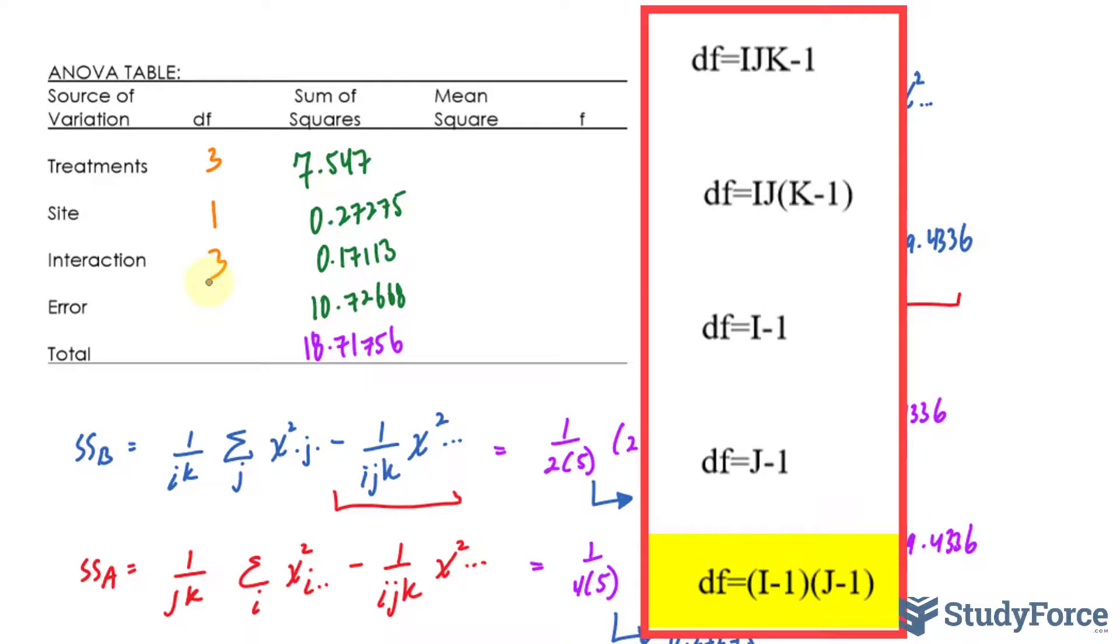The degrees of freedom for the error is the equation shown on your screen, I times J times K minus 1. So we have 2 times 4 times 4, that's 32. And the total is I times J times K minus 1, which amounts to 39.